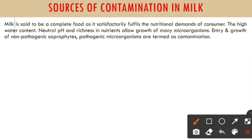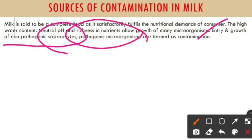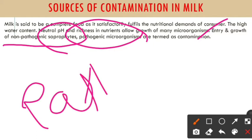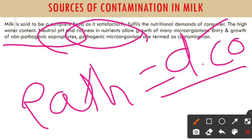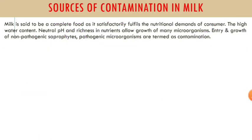When the entry or growth of non-pathogenic saprophytes occurs in milk, contamination starts. Pathogenic microorganisms — meaning disease-causing organisms — when they enter the milk, they start to grow inside it, secreting toxins, which causes the milk to get contaminated.